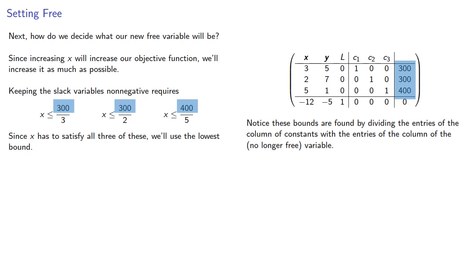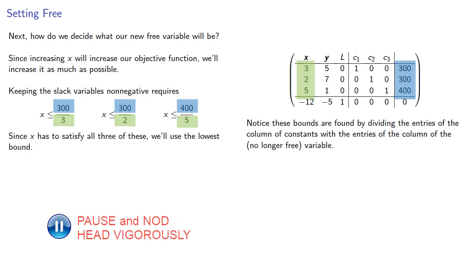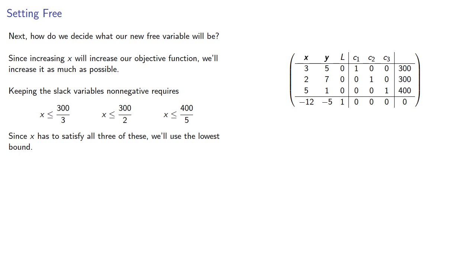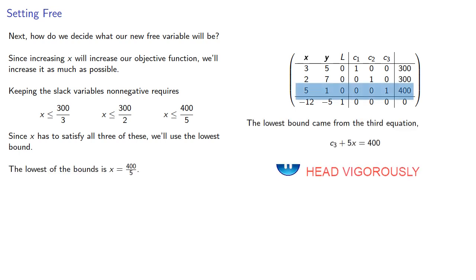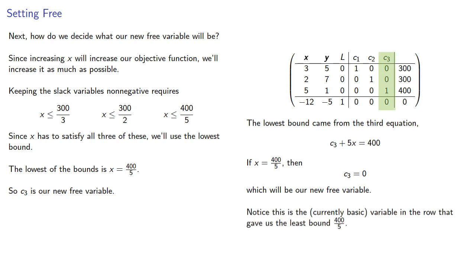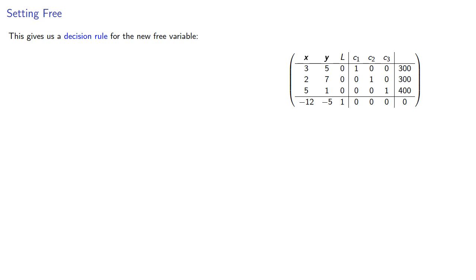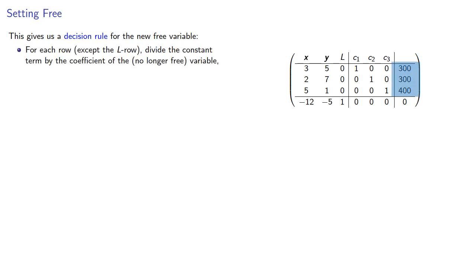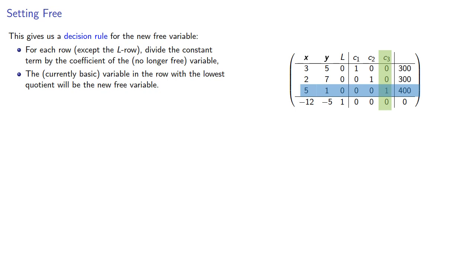Notice these bounds are found by dividing the entries of the column of constants by the entries of the column of the no-longer-free variable. The lowest of the bounds is 400 fifths, coming from our third equation. If x equals 400 fifths, then c3 will be 0, which will be our new free variable. Notice that this is the currently basic variable in the row that gave us the least bound. This gives us the decision rule for the new free variable: for each row except the l-row, divide the constant term by the coefficient of the no-longer-free variable; the currently basic variable in the row with the least quotient will be the new free variable.